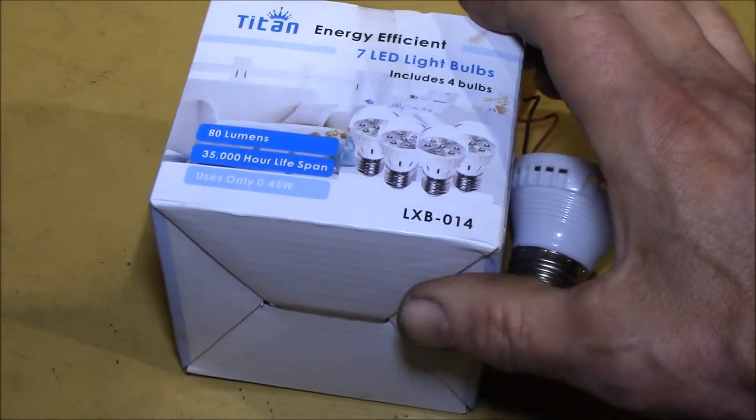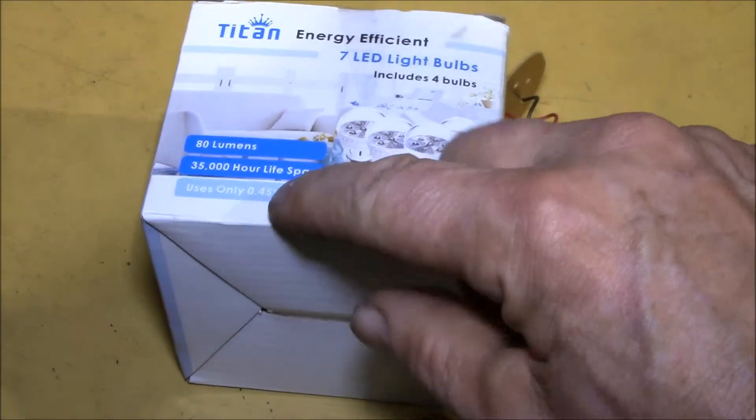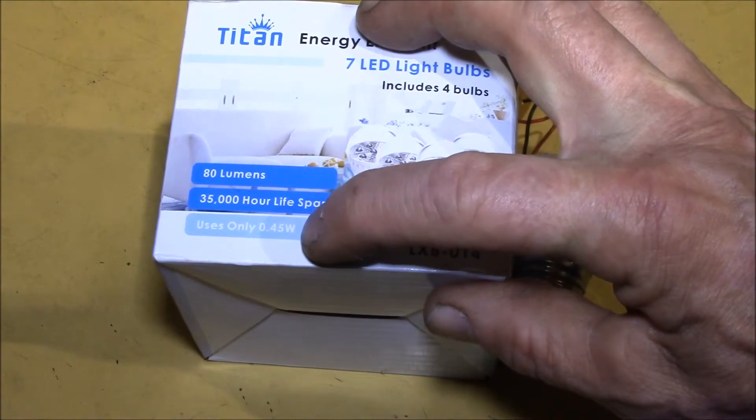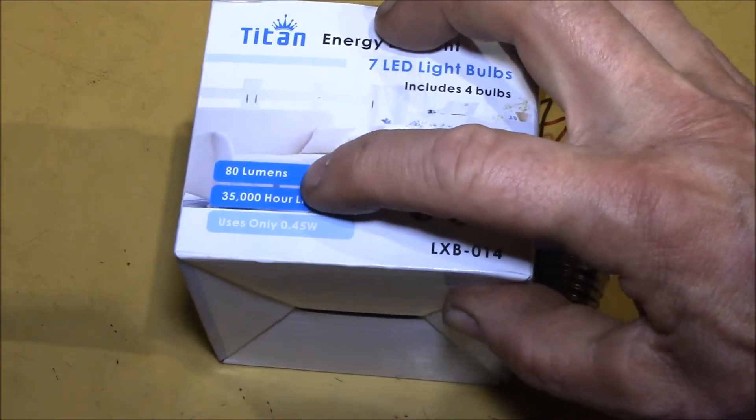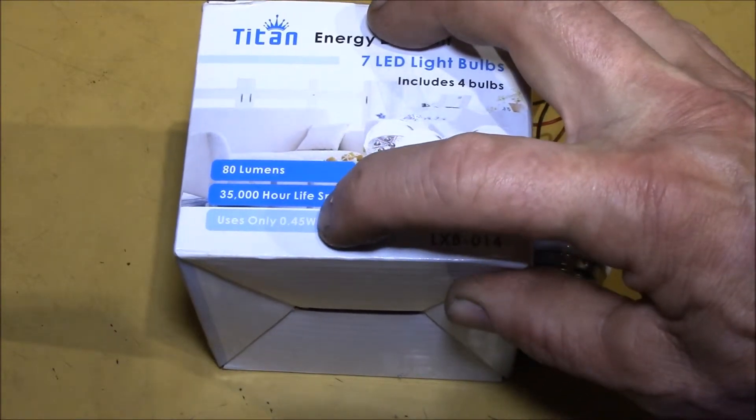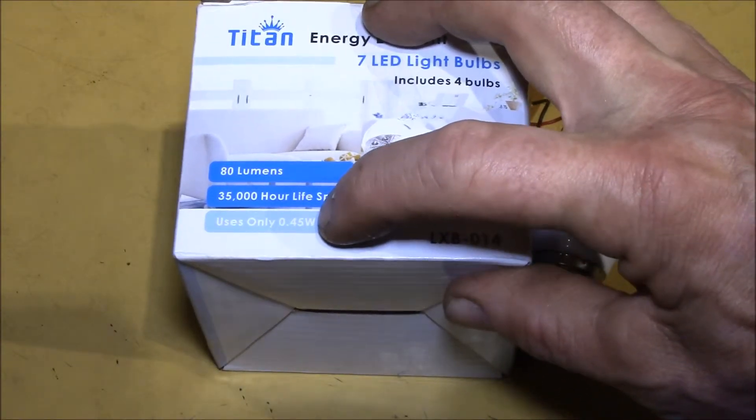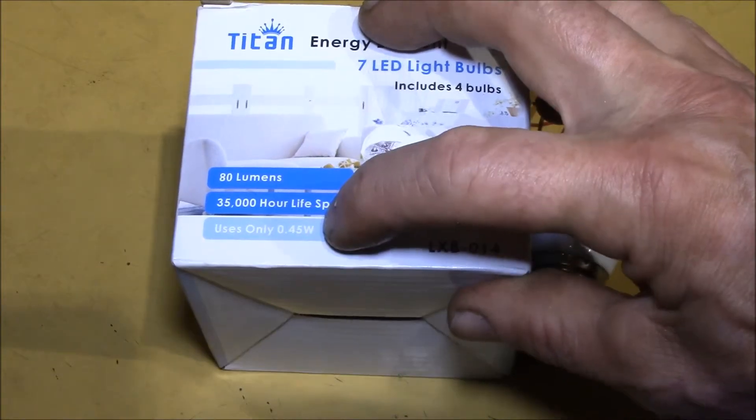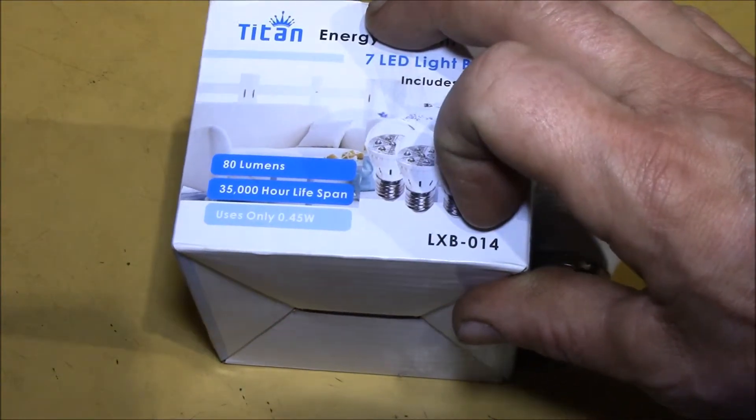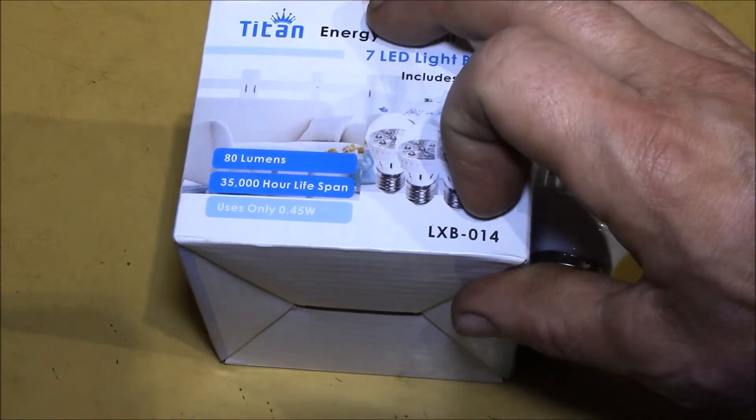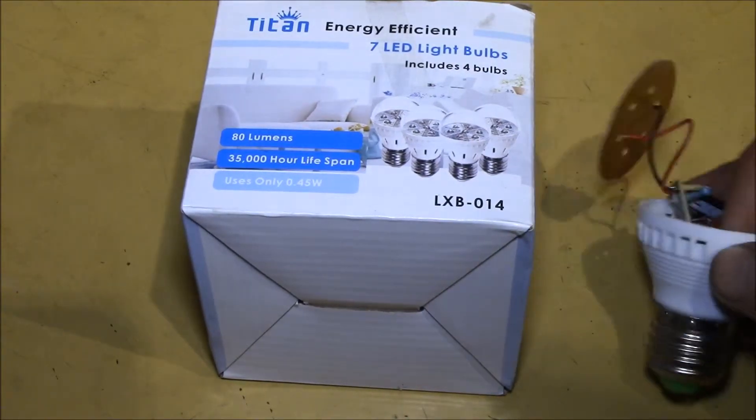You can see their lumens per watt - if you basically doubled that you'd get 160 lumens per watt. Which if that's true, they are probably just overdriving the heck out of those little LEDs and they just burn up.